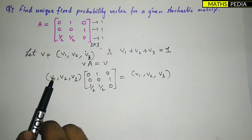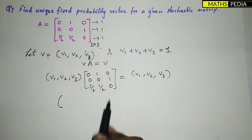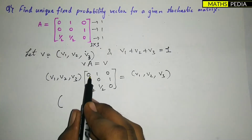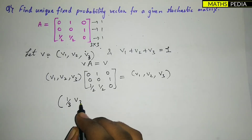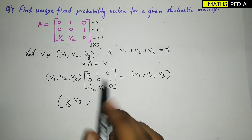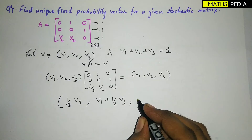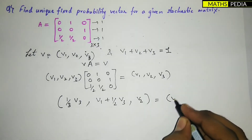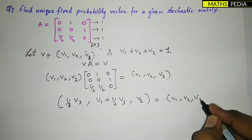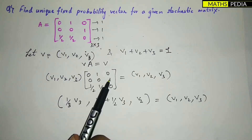To multiply, take this row into each column in turn. So we get: (1/2)v3, then v1 + (1/2)v3, then v2 — and this equals (v1, v2, v3).